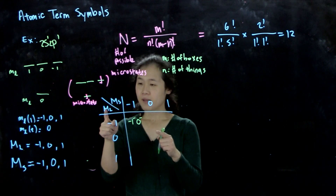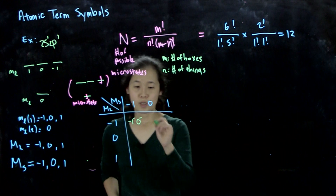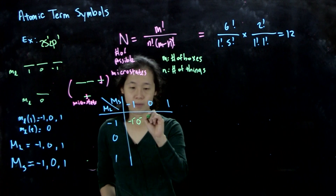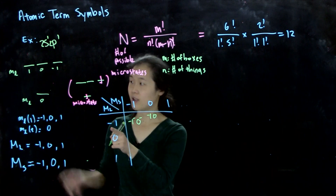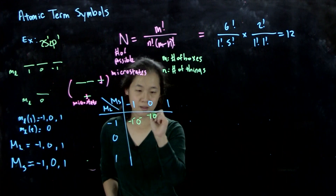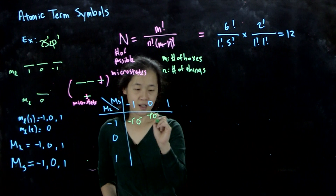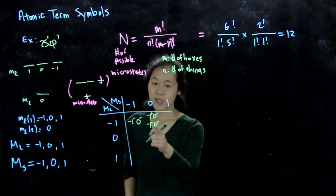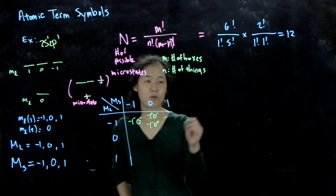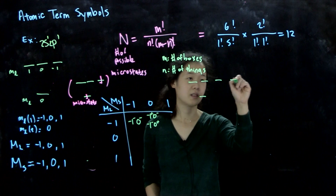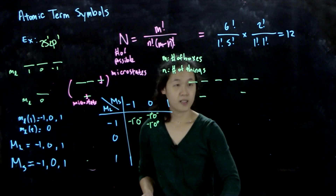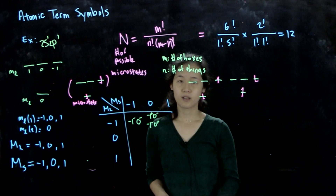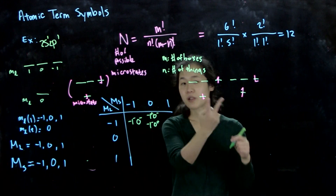For M_L = minus 1 and M_S = 0, there are two microstates: (minus 1+, 0−) where the p electron is spin up and the s electron is spin down, or (minus 1−, 0+) where the p electron is spin down and the s electron is spin up.